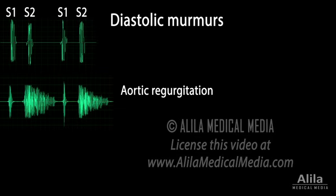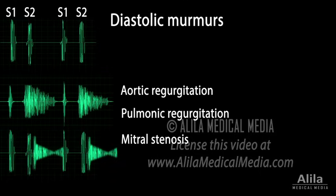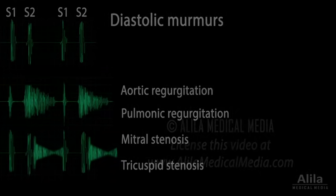Other common diastolic murmurs are associated with pulmonic regurgitation, mitral stenosis, and tricuspid stenosis.